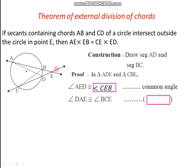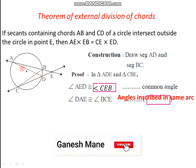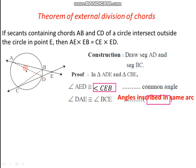Then angle DAE is congruent to angle BCE. The reason is that these are two angles inscribed in the same arc. Both angle DAE and angle BCE are inscribed in arc ABC, and that is why these two angles are congruent.